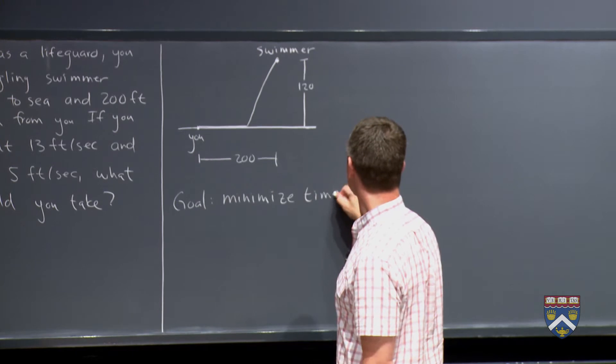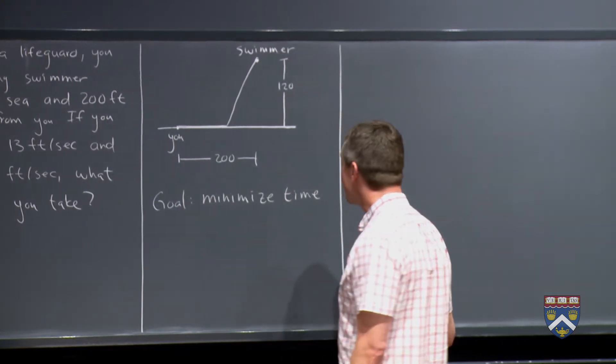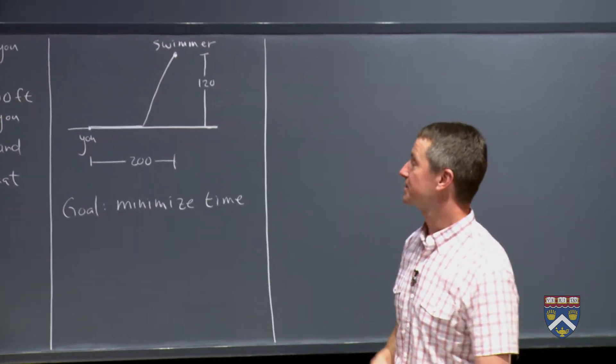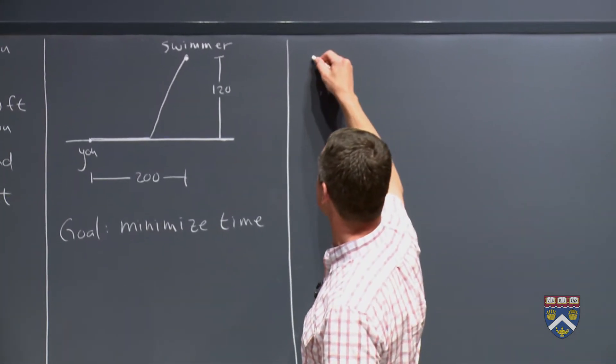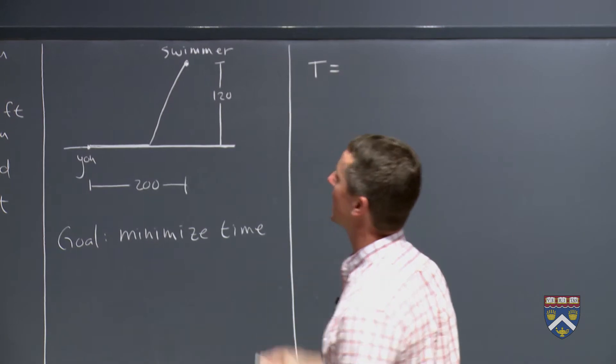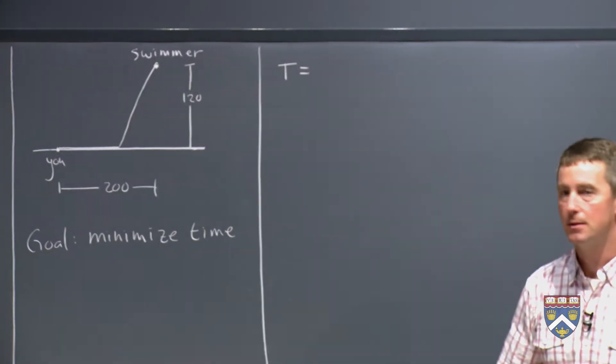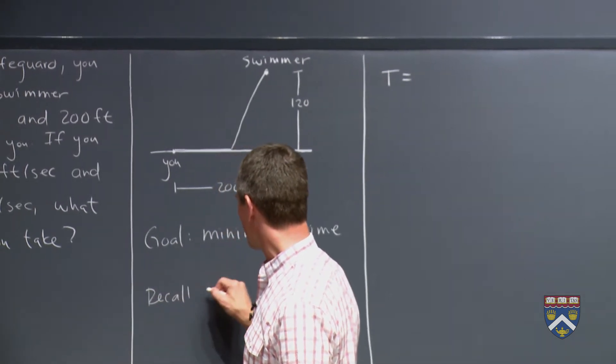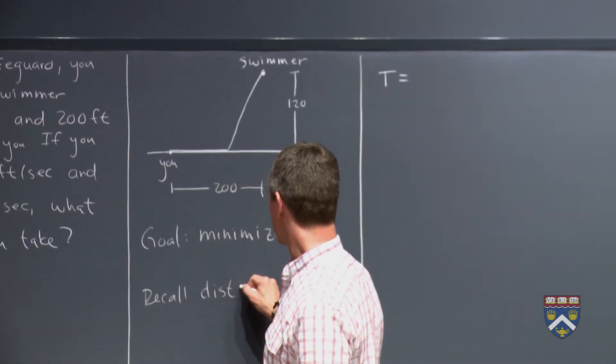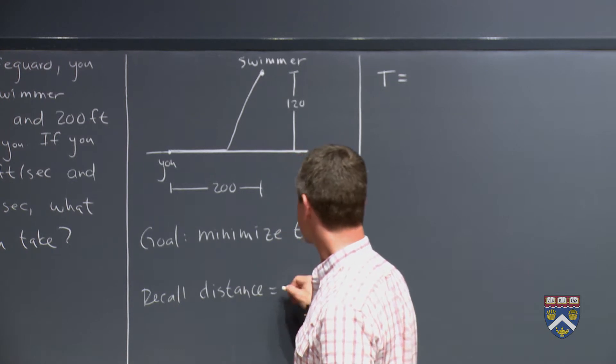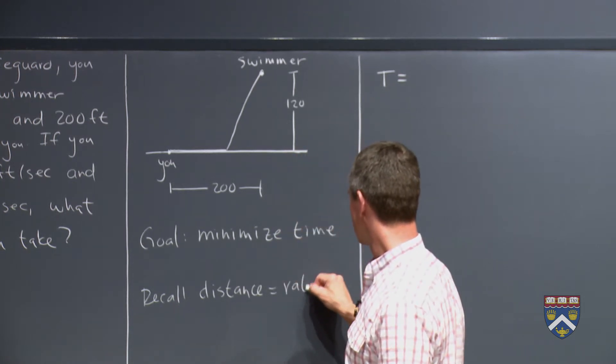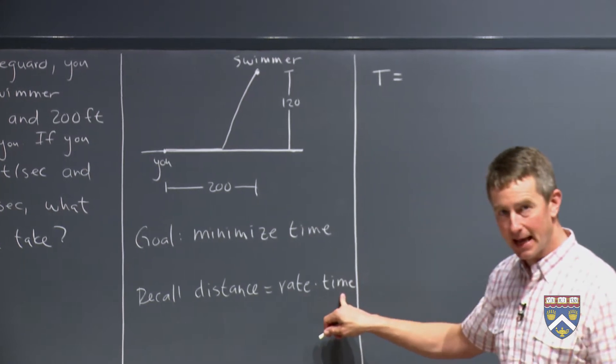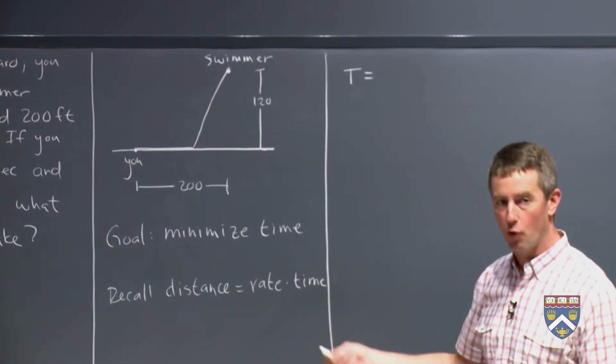So this is going to be a function where the output is time, not the input is time. So we're going to have to write a formula for time T. We might remember that distance is rate times time. Meaning that I can solve for time here and get distance over rate.